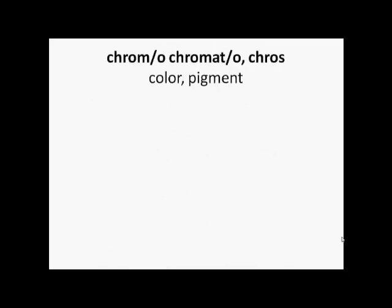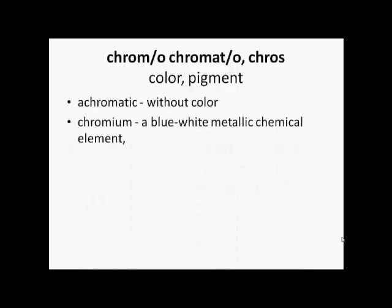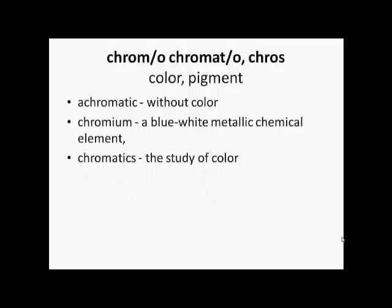'Chrom', 'chromo', 'chromato' are all related to color or pigments. So achromatic means without color. Chromium is a blue-white metallic chemical element. And chromatics is the study of color.